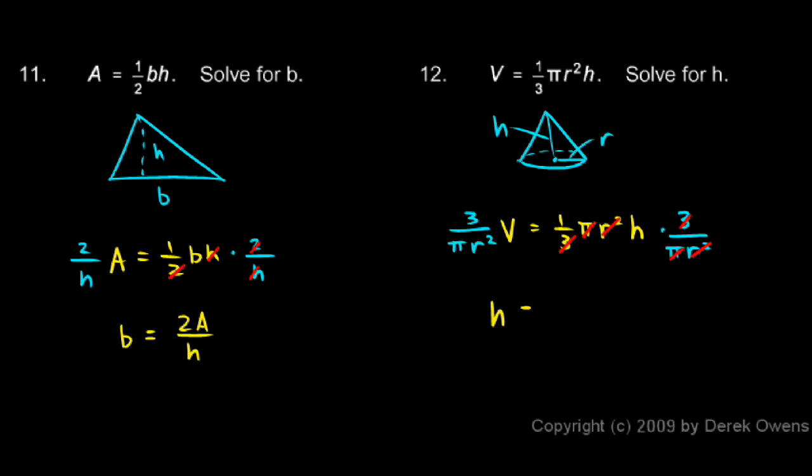And so I'll just write that as my answer. And I'll put the 3 and the v both up top. h is equal to 3v over pi r squared.